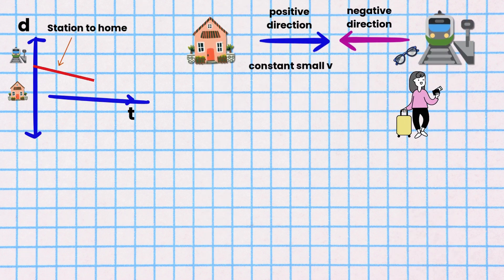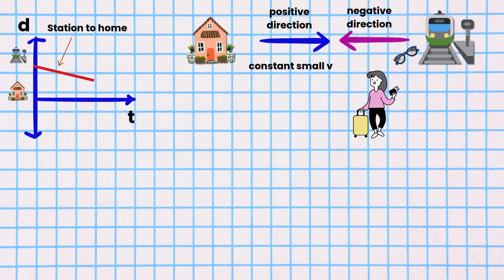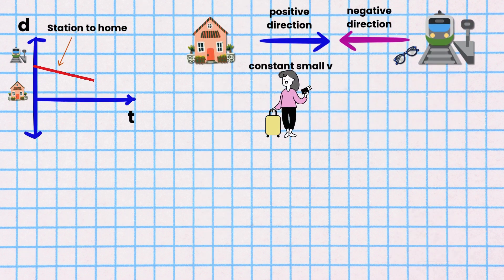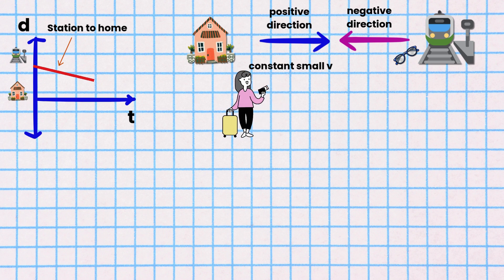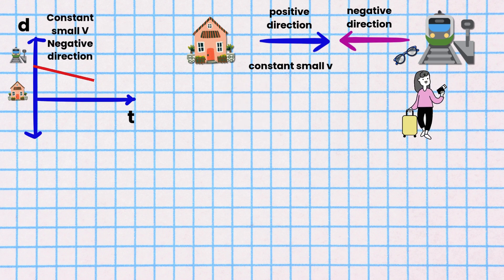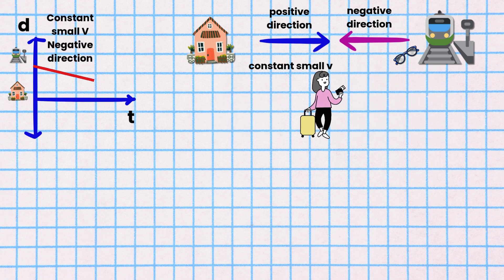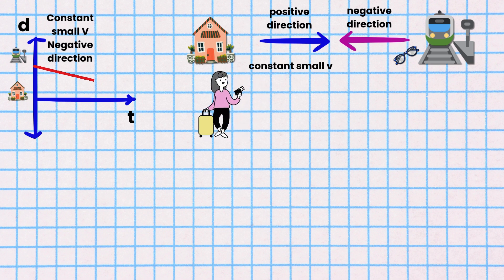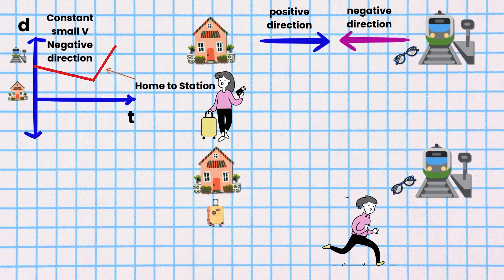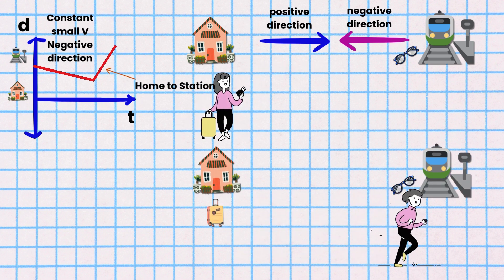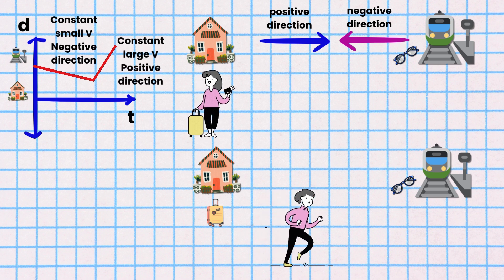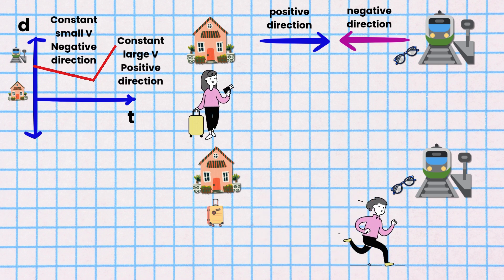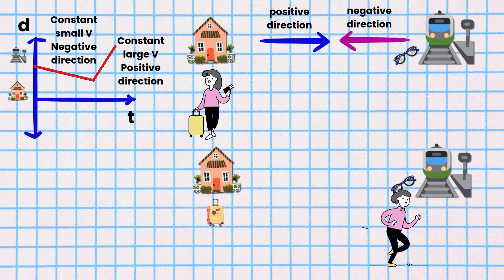The DT graph is a straight line with a shallow negative slope because she walks in the negative direction for the first segment of her journey. For the second segment of her journey, the DT graph is a straight line with a large positive slope because she runs in the positive direction.